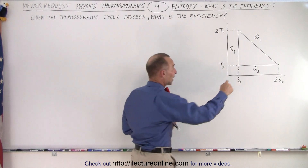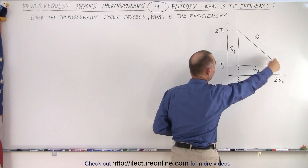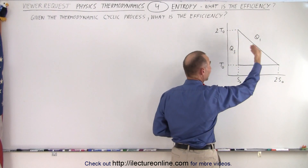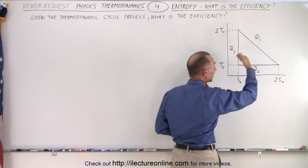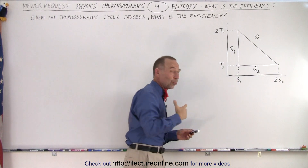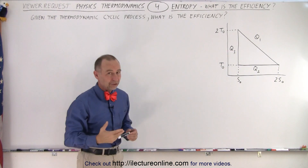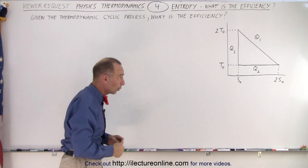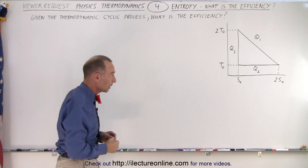You can clearly see that we have a cyclic process, and we have heat flowing in and out of the system. We just don't know which is which yet — Q1, Q2, or Q3.